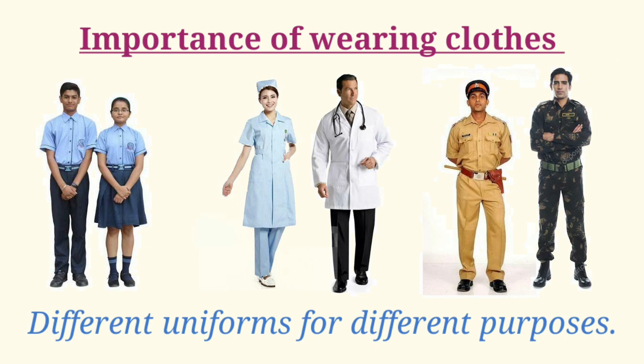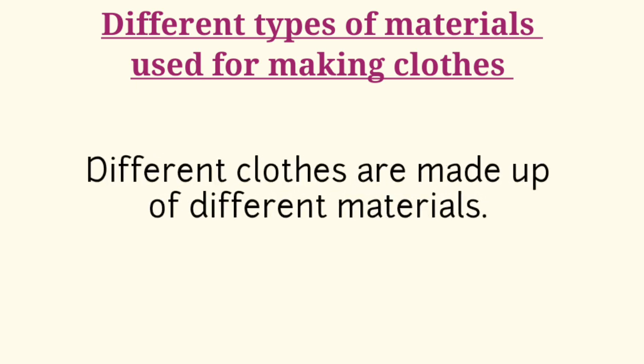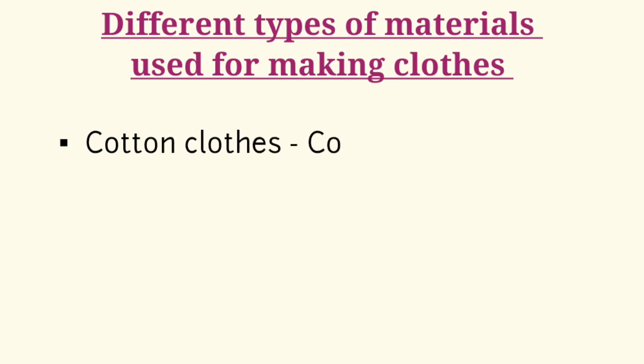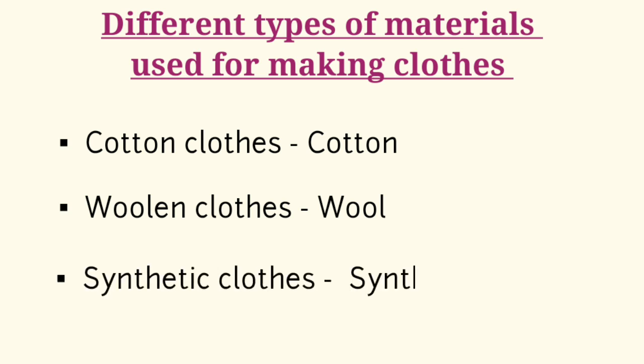Now children, let's learn about different types of materials used for making clothes. Different clothes are made up of different materials, like cotton clothes are made up of cotton, woolen clothes are made up of wool, and synthetic clothes are made up of synthetic material. So these three materials are used for making clothes.